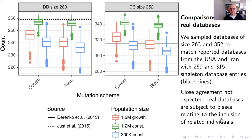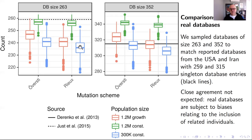We found two published databases — one from the USA and one from Iran. Nearly all sequences were singletons: 259 out of 360 for the USA database, and 315 out of 352 for the Iranian database. The Iranian database was from a particular somewhat isolated ethnicity, which is why there are fewer singletons. Looking at results for our six models — three population models and two mutation models — our models are broadly in the right ballpark for one or other of these two databases, which encouraged us that our models are not completely unrealistic.